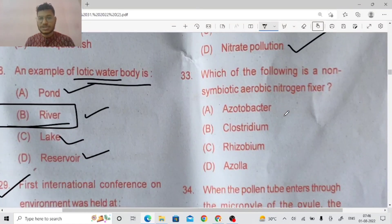Which of the following is a non-symbiotic aerobic nitrogen fixer? Azotobacter. It's non-symbiotic aerobic nitrogen fixer.